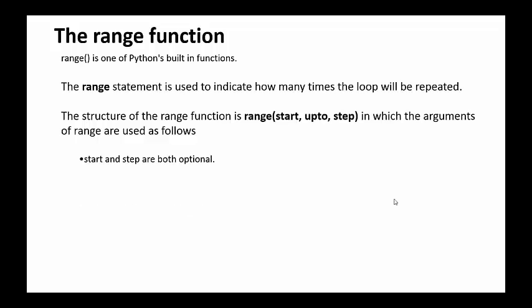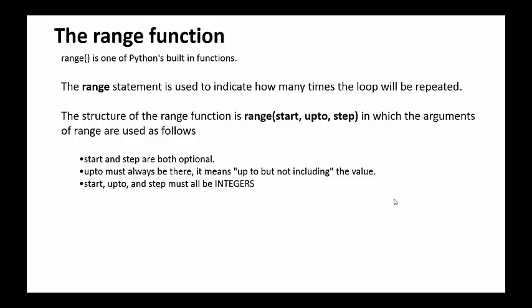The start and the step are both optional — we don't need to use those. The up-to must always be there, and it means up to but not including the value. So if we had range(7), that is going to count from zero up to six — up to but not including seven, so six would be the upper value. All of the numbers that we put in our range function have to be whole numbers; we can't have any decimals.